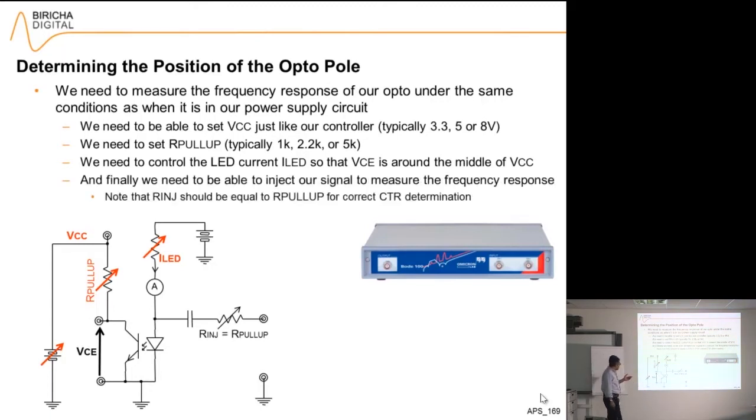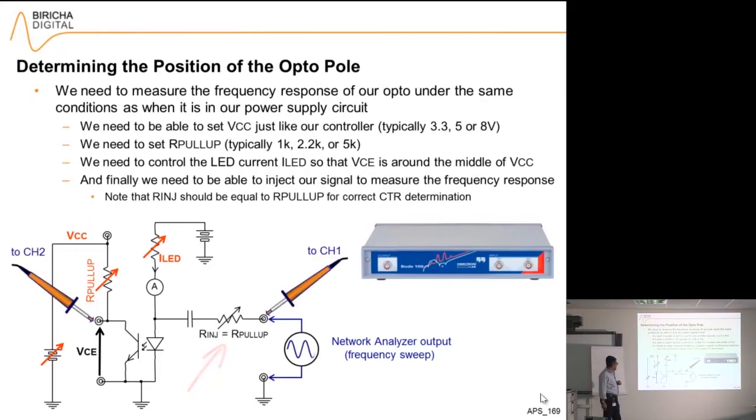So then I've got an injection resistor which is sitting here, and then Bode 100 will inject the signal for me. By placing the probes there and there, I can actually measure the frequency response and plot it. Note that if you make sure that this resistor here is exactly the same value as that resistor there, the gain will be exactly the same as your CTR. So not only will you locate the position of the pole or the bandwidth of the opto, you also get the low frequency CTR.